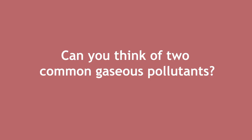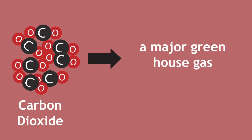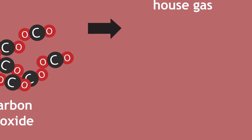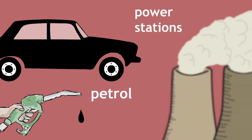Can you think of two common gaseous pollutants? Pause and continue when ready. The main answer is usually carbon dioxide, a major greenhouse gas, which comes from the burning of fossil fuels — so petrol in cars or from fuel burnt in power stations.